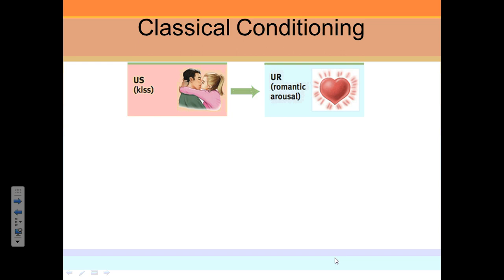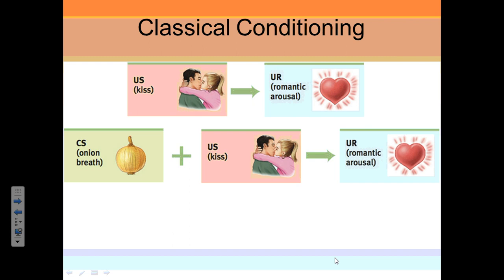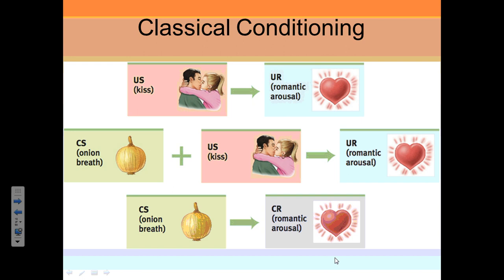Let's take a more outside-the-box example — something natural like a kiss bringing on romantic arousal. A kiss is the unconditioned stimulus (US) and romantic arousal is the unconditioned response (UR). If we pair a neutral stimulus — say, onion breath — with a kiss enough times, you may get onion breath bringing on romantic arousal. Two key word associations: unconditioned equals natural, conditioned equals learned.